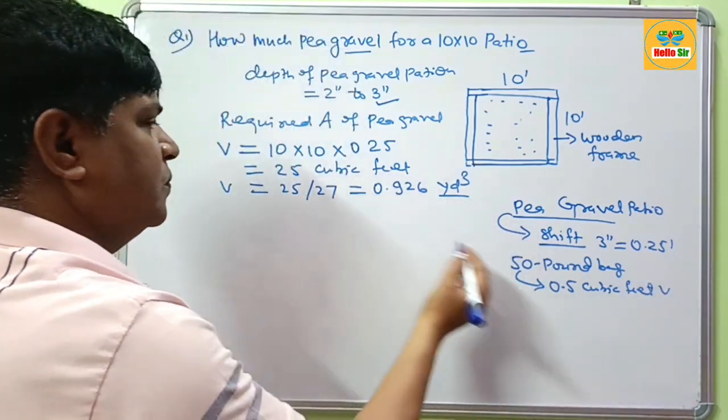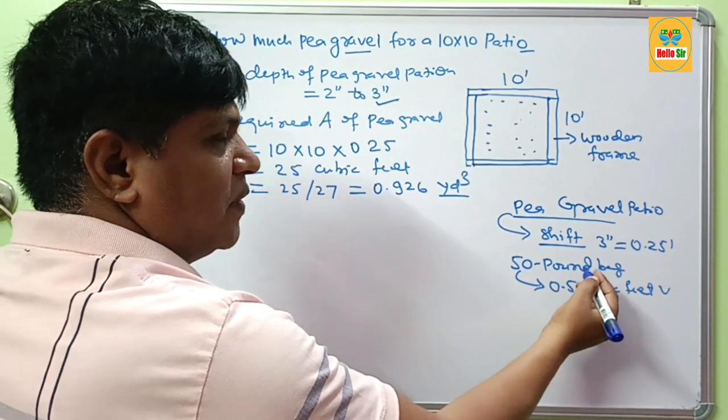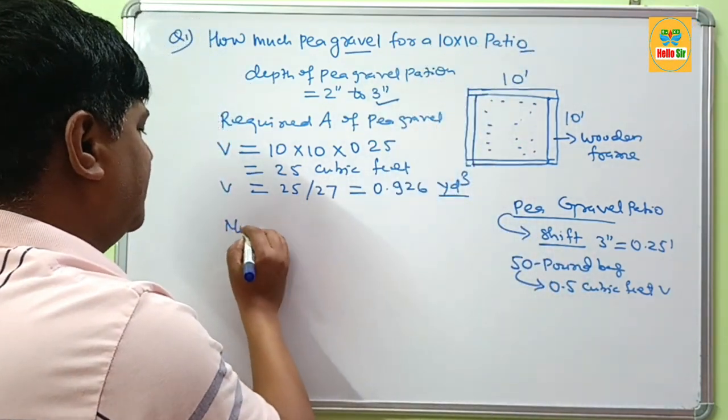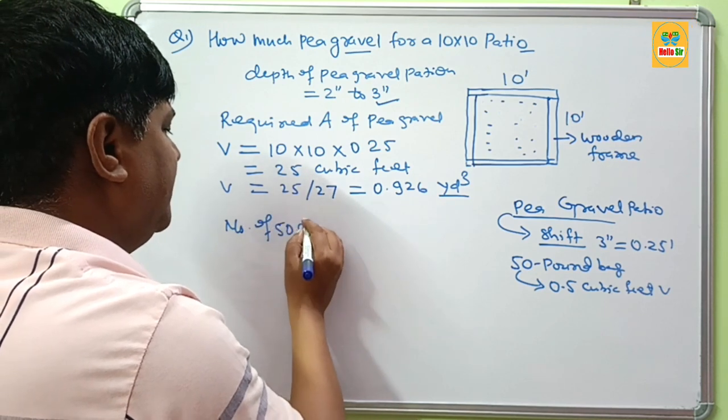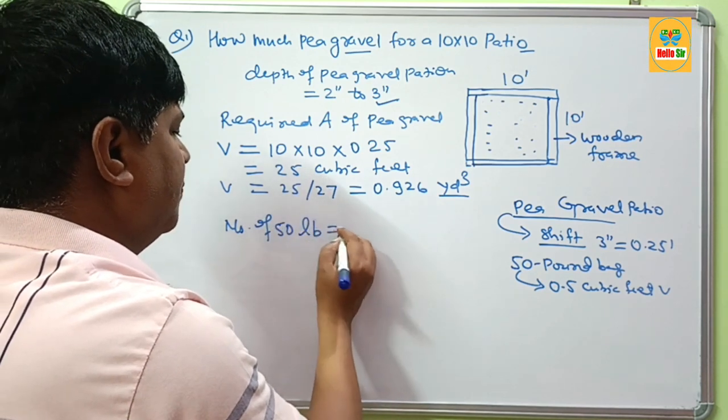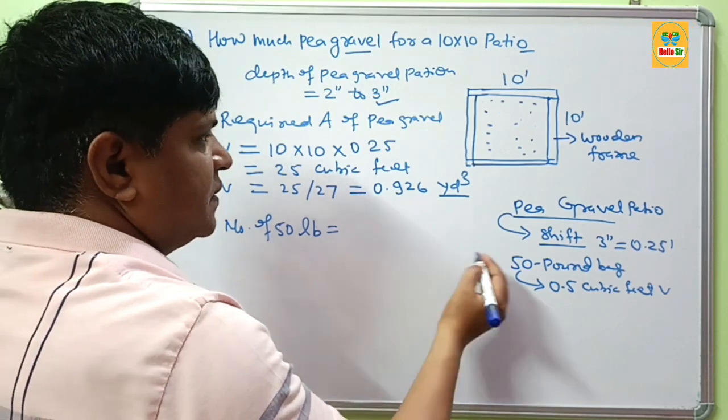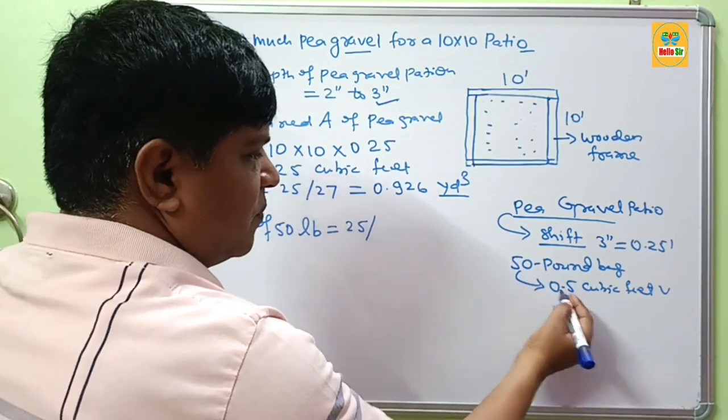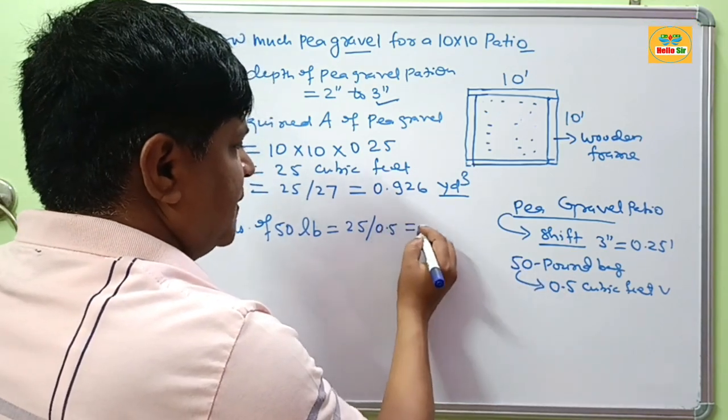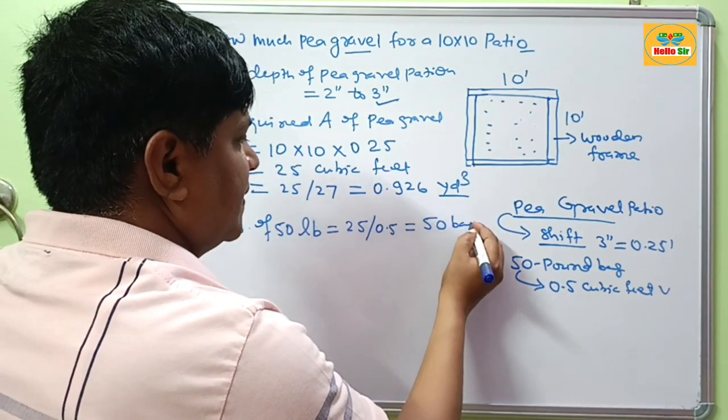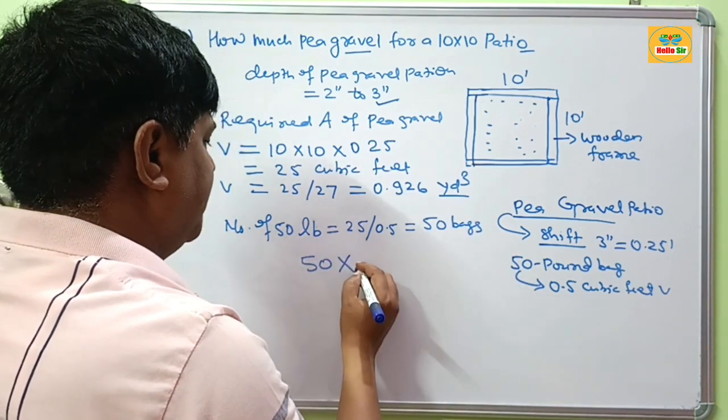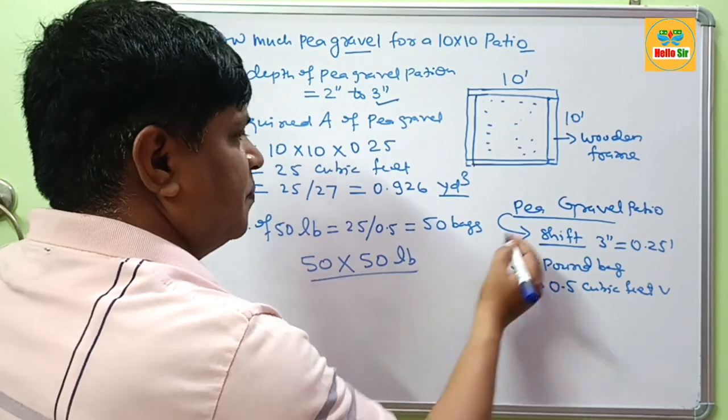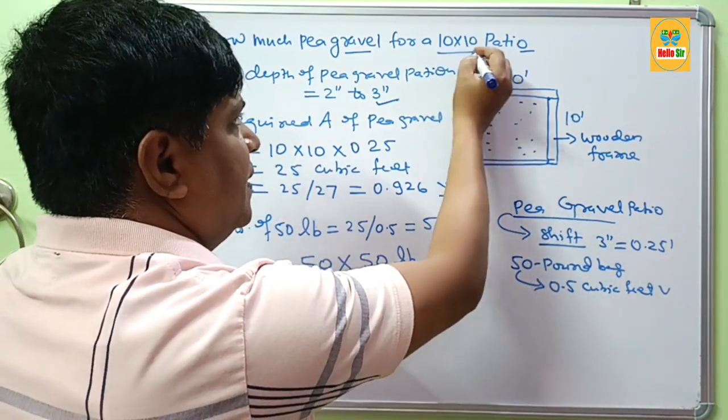To find how many 50 lb bags of big gravel you need for a 10x10 patio, take the total cubic feet area, which is 25, divided by the yield of 1 bag, 0.5. This will count about 50 bags. It means you need 50 bags of 50 lb bags of big gravel for a 10x10 patio.